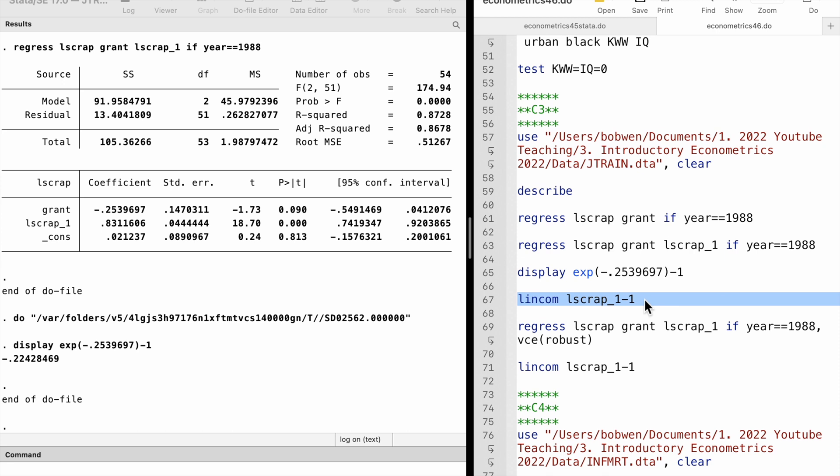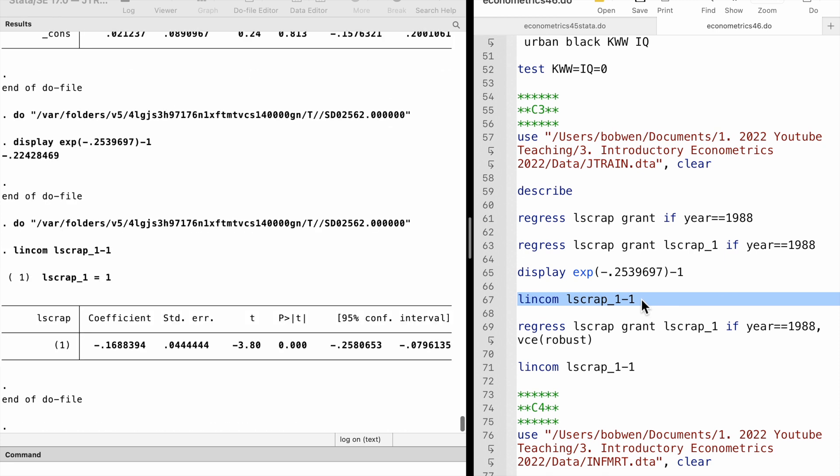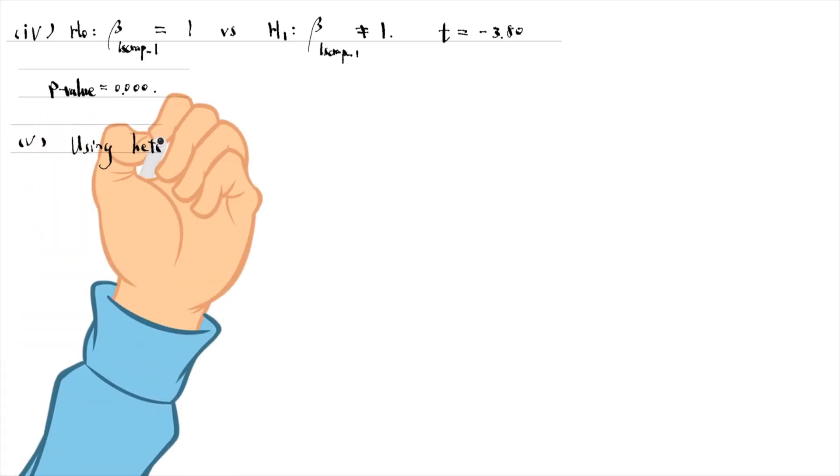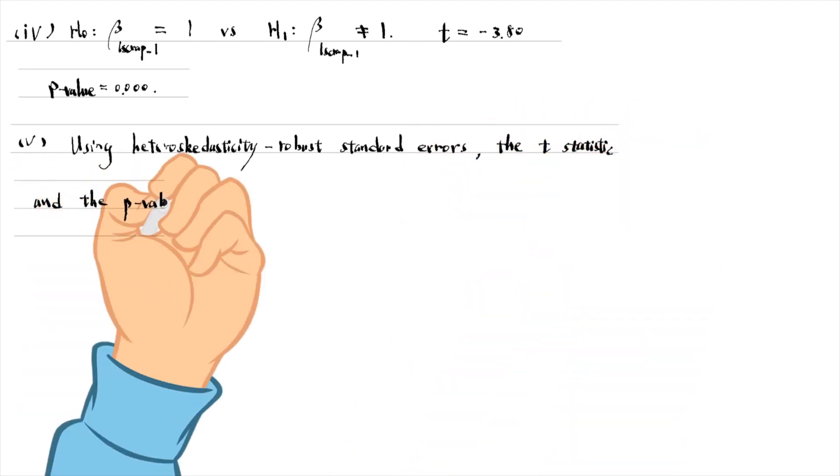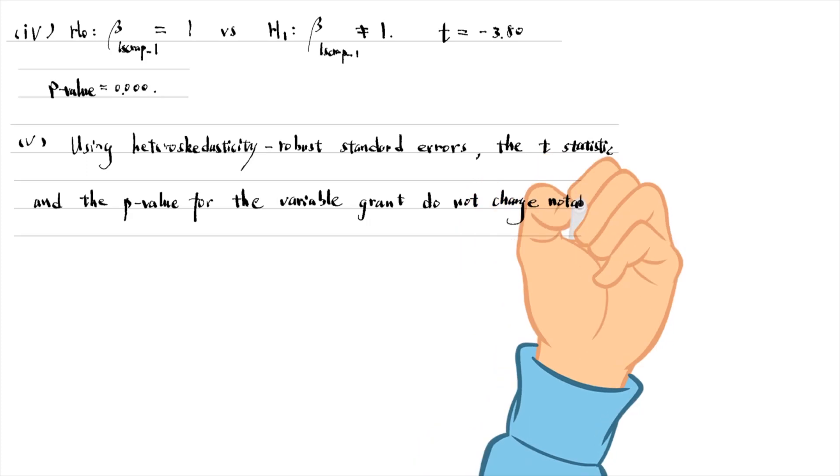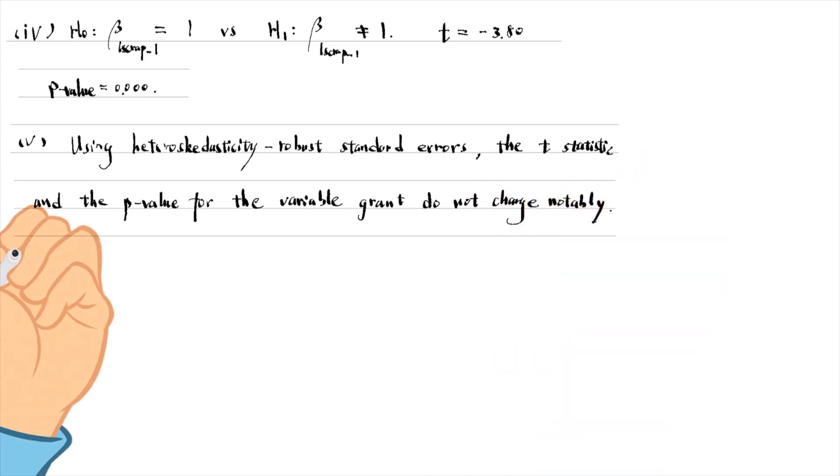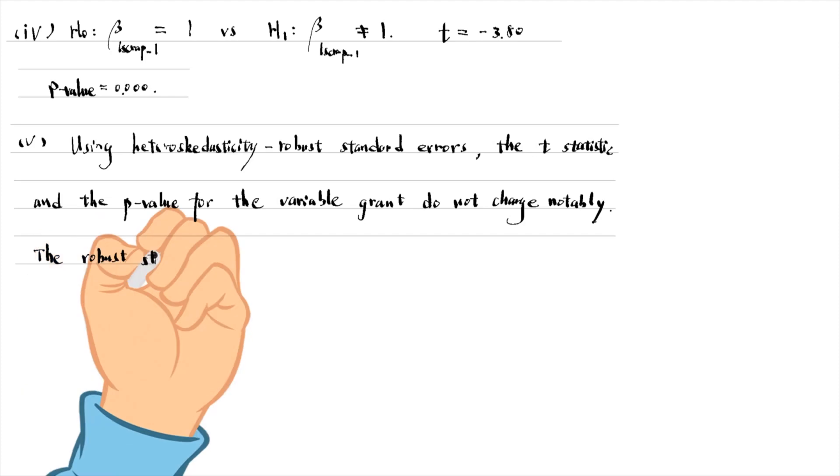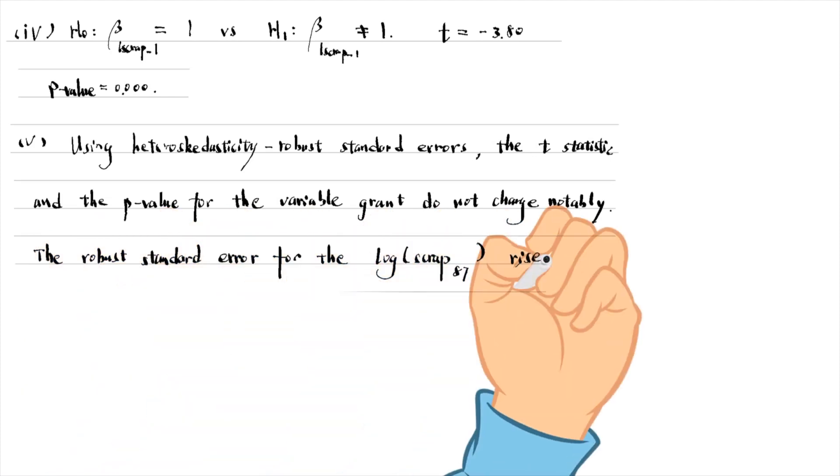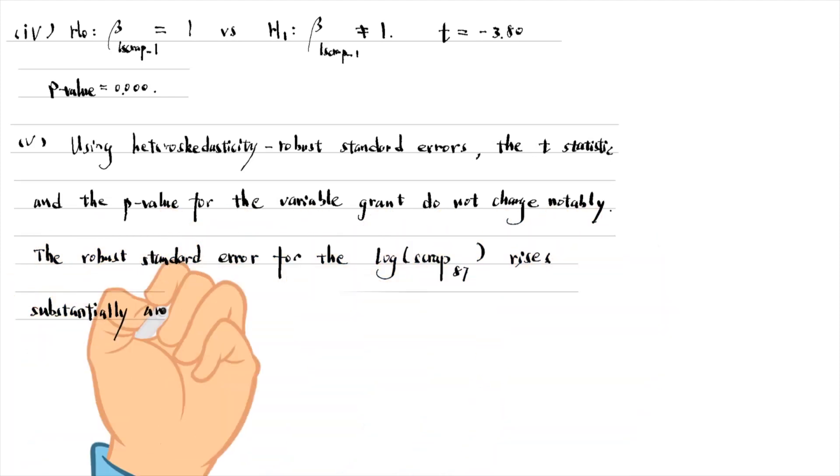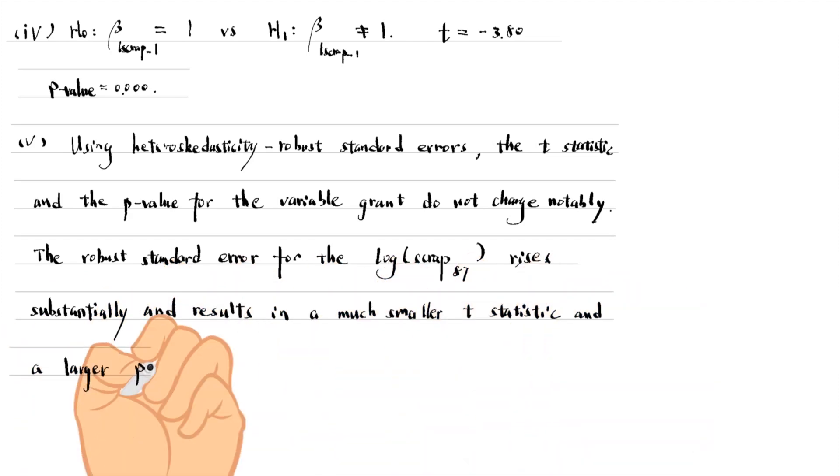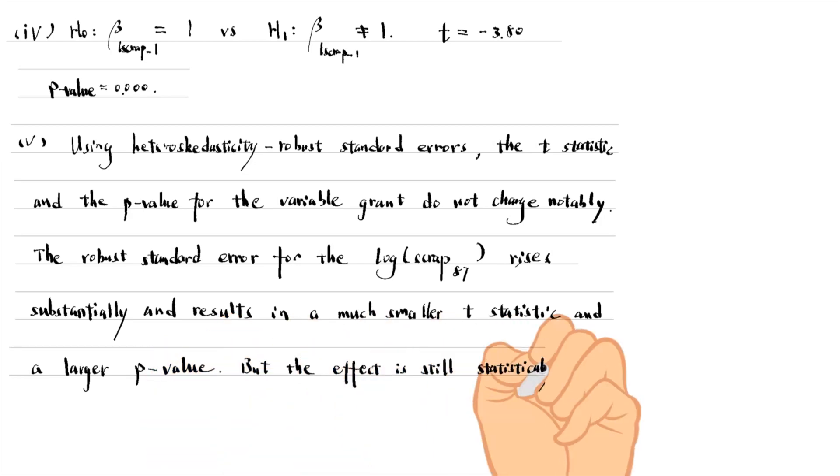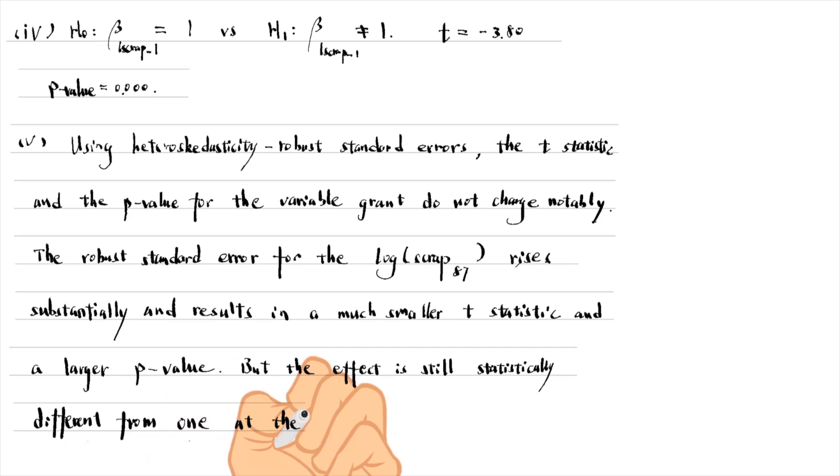We write the linear combination after the command. In part 5, using the heteroscedasticity robust standard errors, the T-statistic and the p-value for the variable grant do not change notably. The robust standard error for last year's scrap rate rises substantially, resulting in a much smaller T-statistic and a larger p-value. But the effect is still statistically different from 1 at the 5% level.